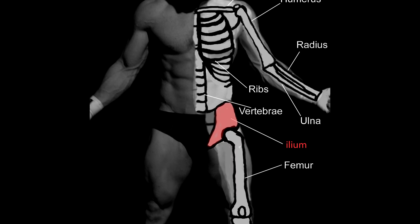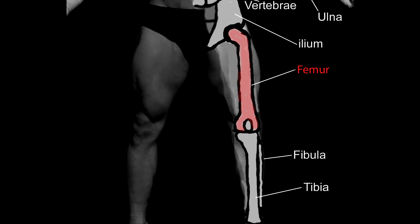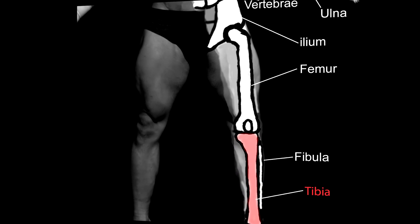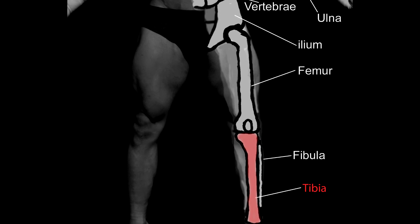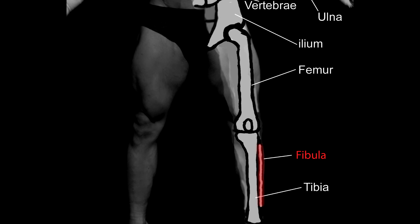The largest bone of your pelvis is known as the ilium. The large bone of your thigh is known as the femur. Your kneecap is known as the patella. Your lower leg, like your forearm, is made up of two separate bones: the larger bone, which is the tibia, and the smaller bone on the outside of your leg, which is the fibula. The bones of your feet are the tarsals and the metatarsals.